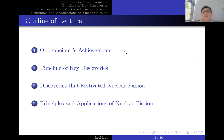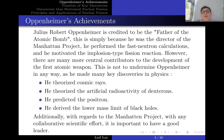First, I will talk about some of Oppenheimer's achievements and his contributions to the Manhattan Project. Then I will talk about a key timeline of discoveries that led to the development of nuclear fission and subsequently the atom bomb. These key discoveries come in two categories: first, the discoveries that motivated nuclear fission, and secondly, the principles and applications of nuclear fission.